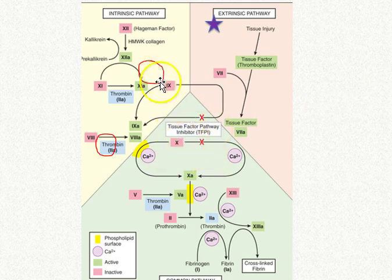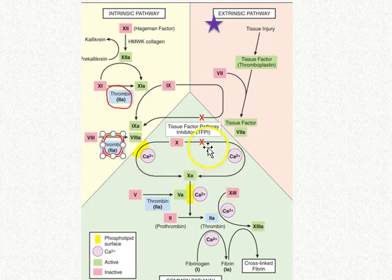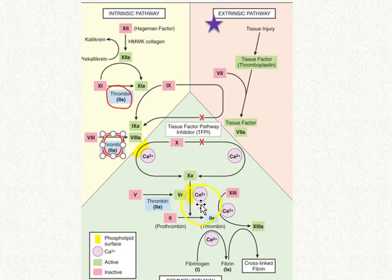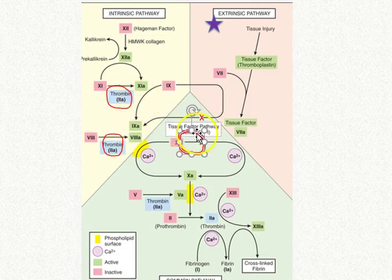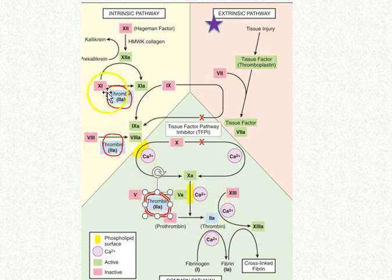Factor 10 is critically important because it is one of the key activating factors for thrombin. Prothrombin — factor 2, shown in the pink box — is not biologically active. Only when it comes into contact with factor 10a, factor 5a, and calcium does prothrombin get converted into thrombin. That active thrombin — factor 2a, shown in the blue box — can then activate factors 5, 8, and 11, which is why inhibiting it with heparin is so important.